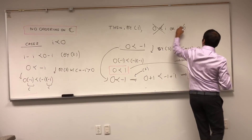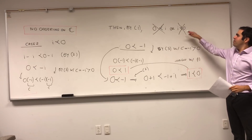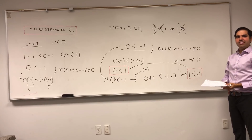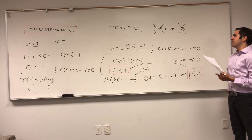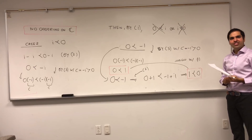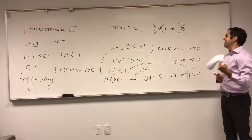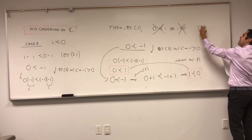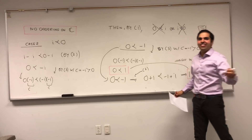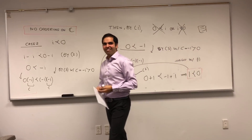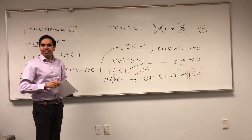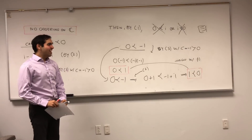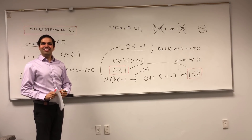Therefore, in both cases we get a contradiction. We assumed one of the two cases must hold, but we've shown neither of them holds. So there is no way to order the complex numbers with those nice properties. Which is a bit sad, but complex numbers are still beautiful.